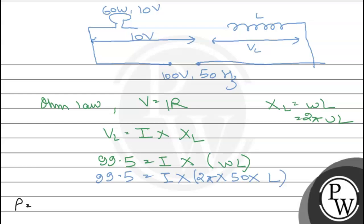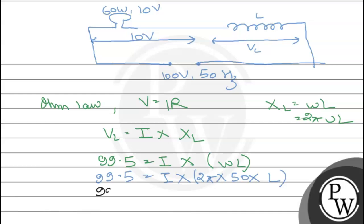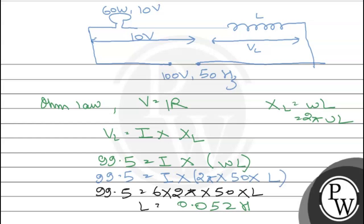Current through the bulb: P = V × I, so 60 = 10 × I, giving I = 6 A। Now value put करते हैं: 99.5 = 6 × 2π × 50 × L. यहां से L आ जाएगा = 0.052 Henry. Hence the final answer is: the required induction coil has self-inductance of 0.052 Henry, which is option A. Hope you understood it well, best of luck.